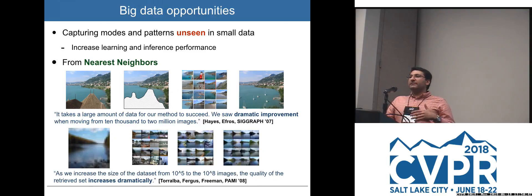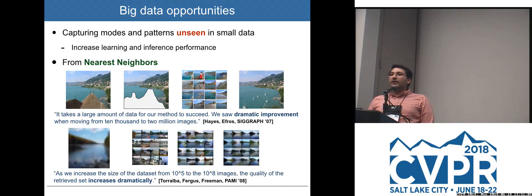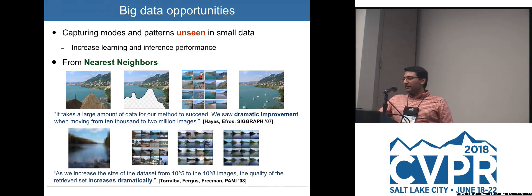In terms of recognition, this has affected simple techniques such as nearest-neighbor-based methods. One interesting example is the work by Eliosha Frost and James Hayes on image completion: you have an image with an unwanted part you want to remove, and you fill it using contents from best-matching images in a large database. They saw dramatic improvement when moving from 10,000 samples to 2 million images. Similarly, the work of Turalba and Freeman showed that retrieval quality significantly improves as the data set size increases.